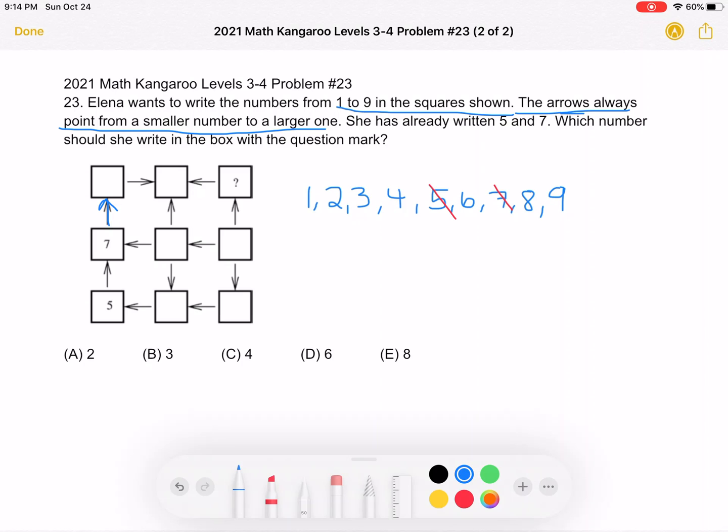the number in the other box must be greater than 7. And out of our list, we can see that only 8 or 9 are greater than 7. So in that box above the 7, we can either place an 8 or a 9.